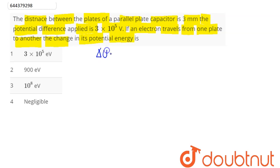Change in potential energy when an electron travels from one plate of the capacitor to the other plate will be given here as Q into delta V.